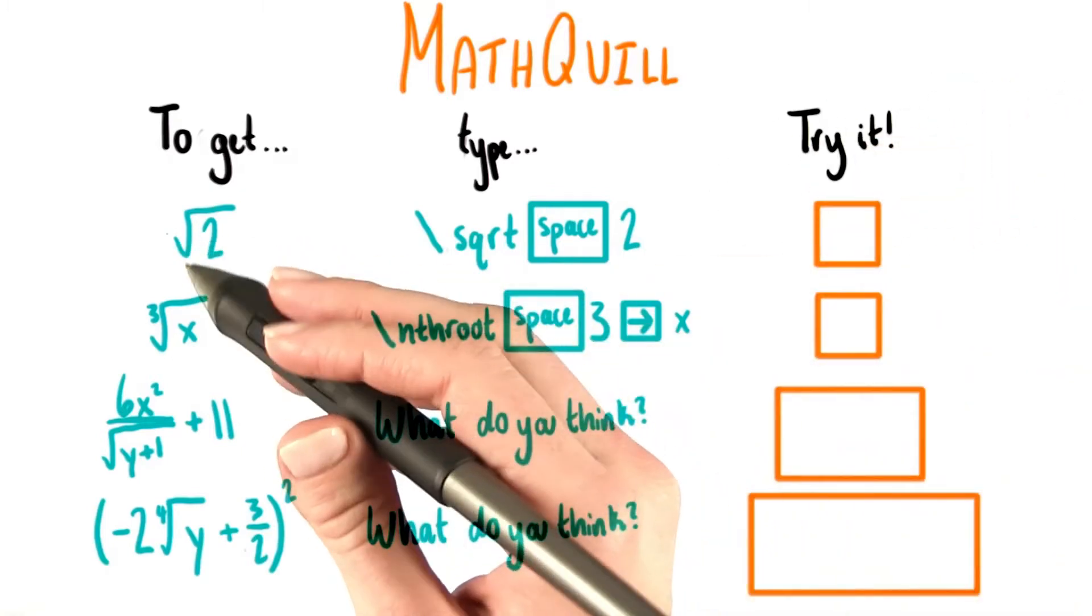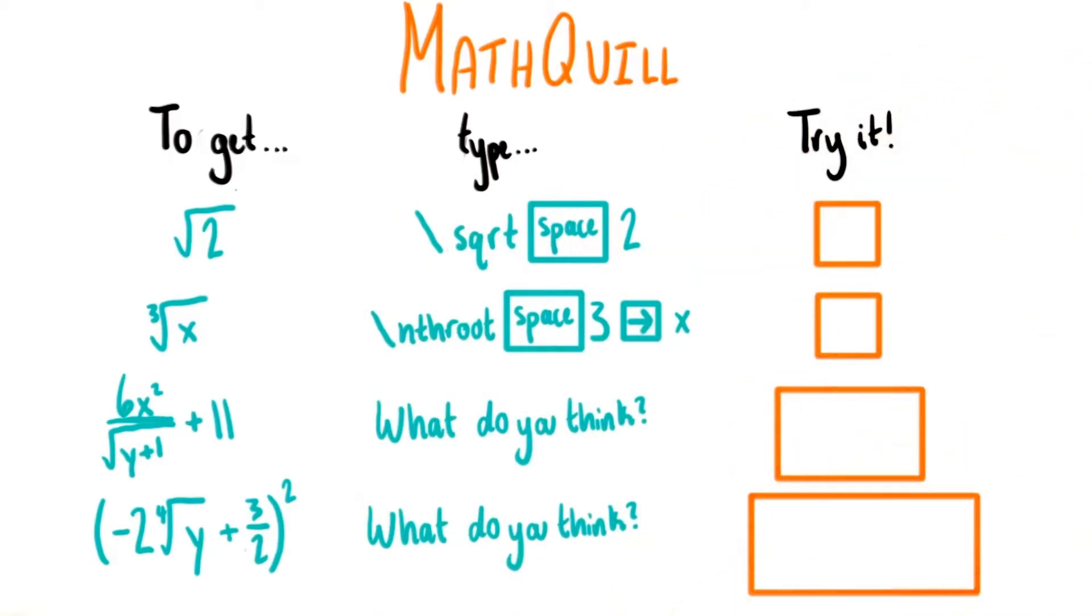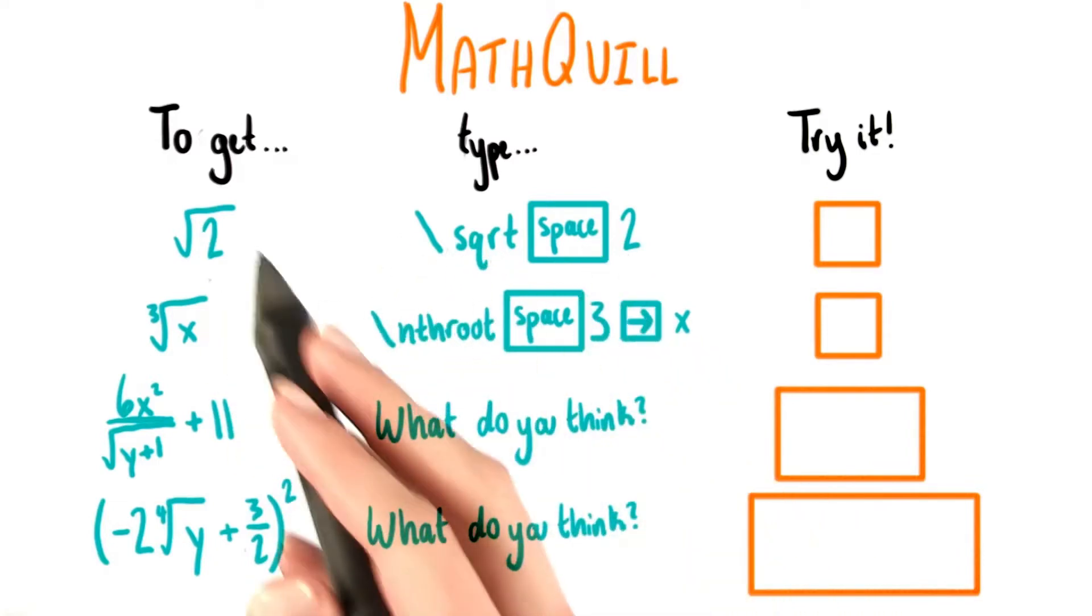But now that we're starting to use radicals, we need to use MathQuill in a new way. I already showed you earlier how to enter square roots in MathQuill. You type backslash, SQRT, space, and then whatever goes inside.